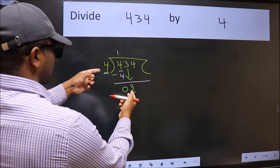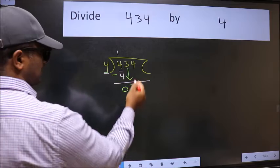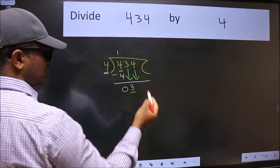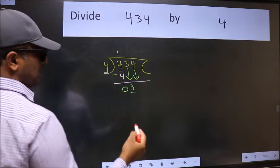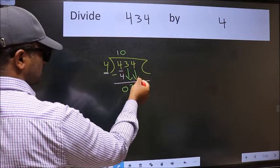3 is smaller than 4, so we should bring down the second number. And the rule to bring down the second number is we should put 0 here.